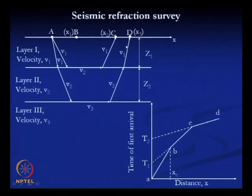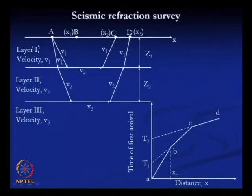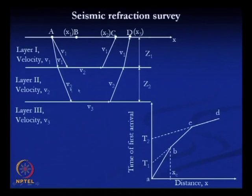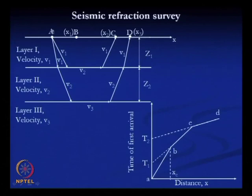By using this method, we determine the velocity of the P-wave passing through different soil layers and the thickness of each soil layer. This gives us an idea of where different types of soils are located, the thickness of each soil layer, and where bedrock is present. Different soil layers have their own P-wave velocity ranges, so from the measured velocity we can also identify what type of soil is in each layer.